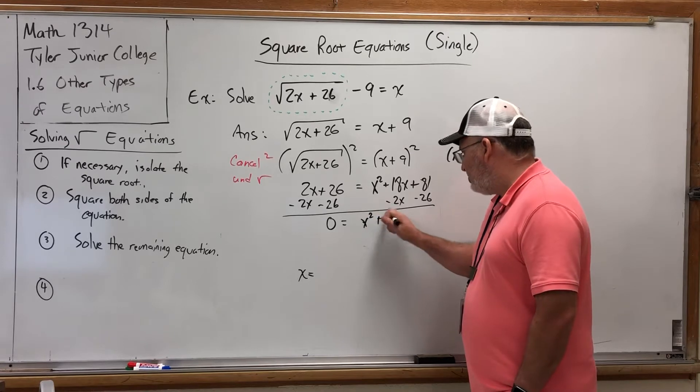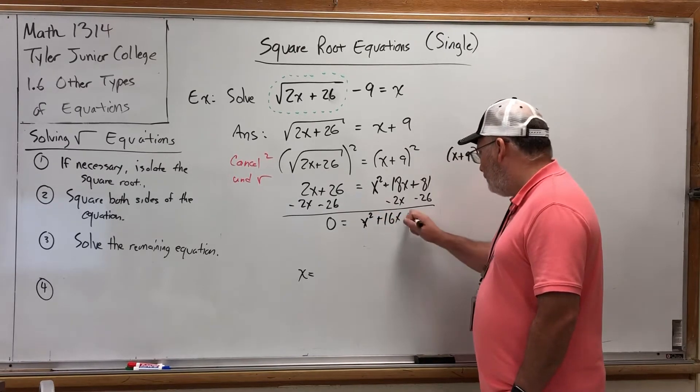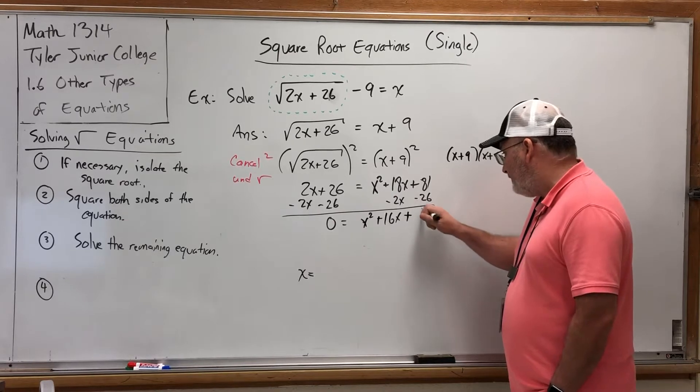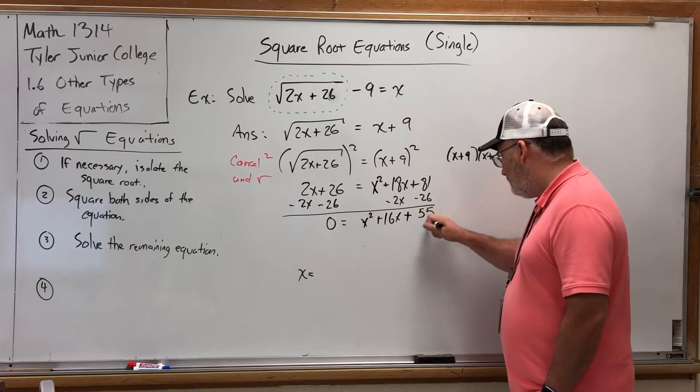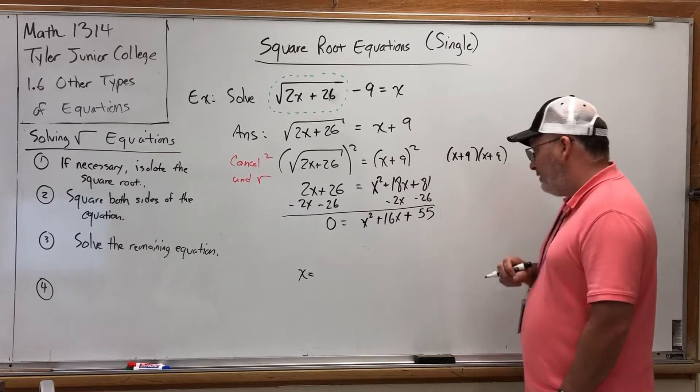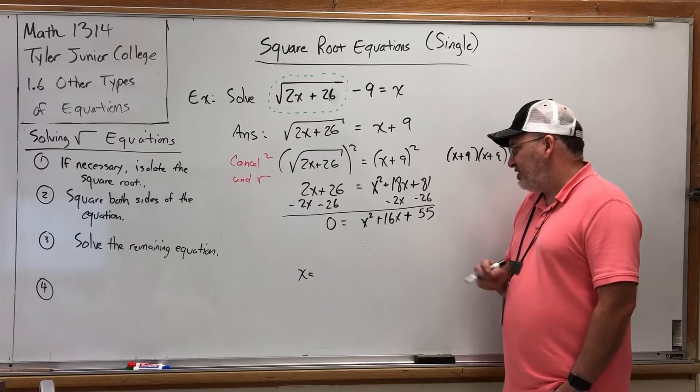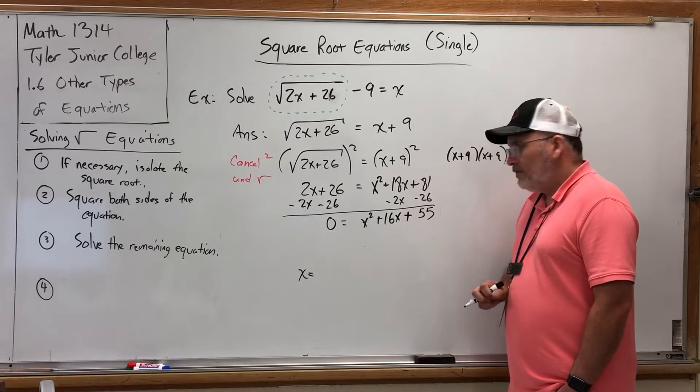That gives us 0 on the left, x squared plus 16x plus... Plus, looks like it's going to be 55. That doesn't sound right. Except it is. And that leaves us x squared plus 16x plus 55 on the right.